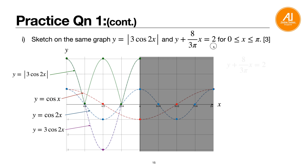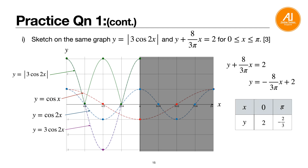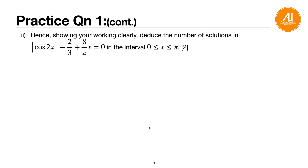For the line y + (8/3π)x = 2, rearrange to make y the subject: y = −(8/3π)x + 2. To draw a straight line on a trig graph, use a small table with two points. Choose x = 0 and x = π. At x = 0, y = 2. At x = π, the π's cancel giving y = −8/3 + 2 = −2/3. Plot (0, 2) and (π, −2/3), connect and label.